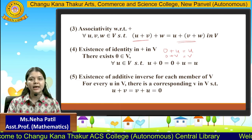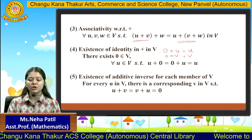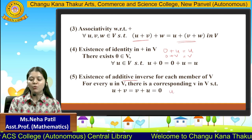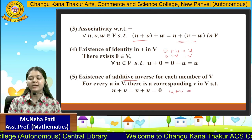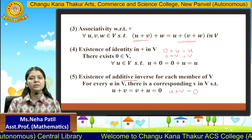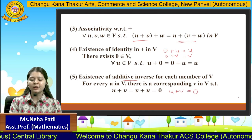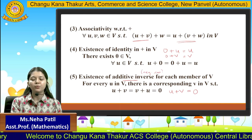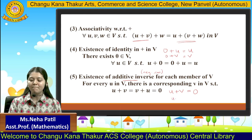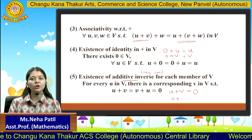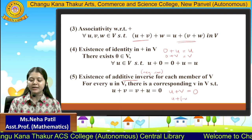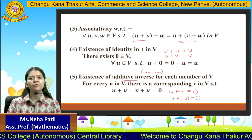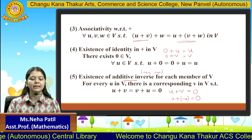The fifth property is the existence of additive inverse. We must find an element such that when it is added with any element, the result is zero. The additive inverse can also be called negation — meaning u plus (−u) will always result in zero. So we can also call the additive inverse the negation.